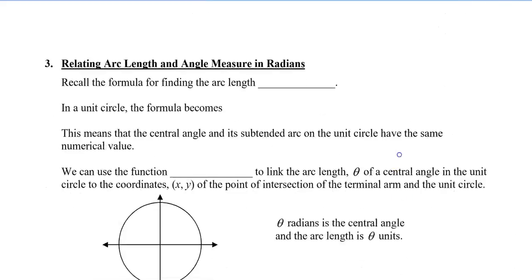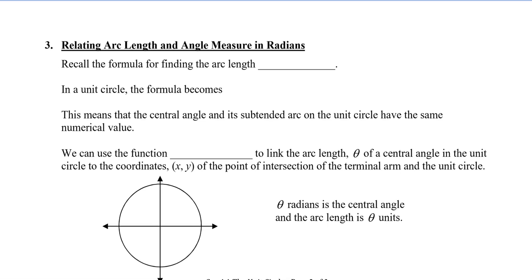Now we're going to relate arc length and angle measure in radians. Recall that the formula for arc length is a equals r times theta. In a unit circle this is really nice because the radius is 1, so we get a equals theta. This means that the central angle and the subtended arc on the unit circle actually have the same numerical value.